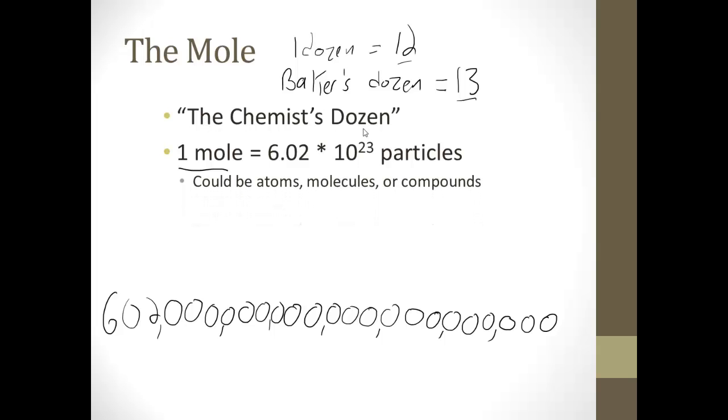And that could be, since it's particles, it could be atoms, molecules, or compounds. So like a single hydrogen atom, if you had 6.02 times 10 to the 23rd of those, that would be a mole of hydrogen. For water molecules, if we had 6.02 times 10 to the 23rd of these, that would be a mole of water molecules.